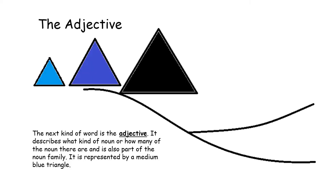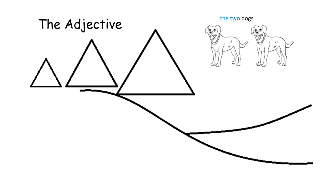The next kind of word is the adjective. It describes what kind of noun or how many of the noun there are and is also part of the noun family. It is represented by a medium blue triangle. You can see here that I've colored the word two medium blue because it is an adjective that describes how many dogs there are.